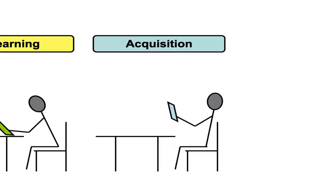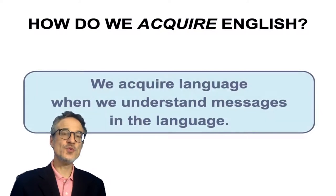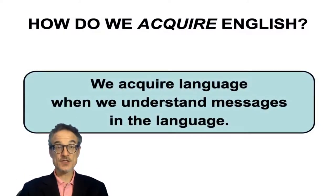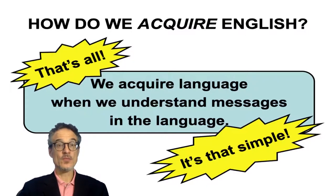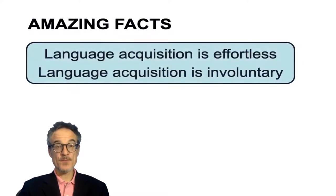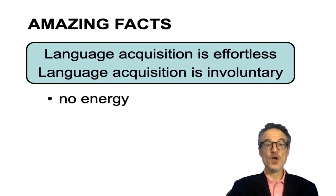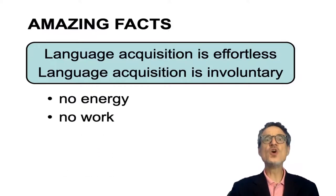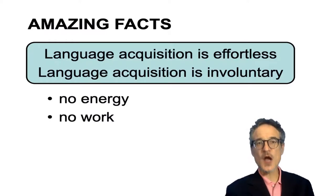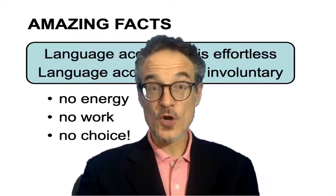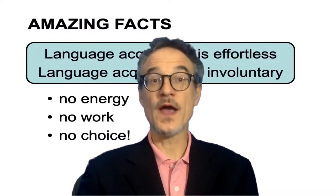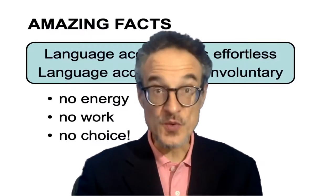So how do we acquire English? According to the hypothesis, we acquire language when we understand messages in the language — and that's all. It's very simple. A couple of amazing facts: language acquisition is effortless and involuntary. No energy or work is required. Small children don't try to pick up their first language. And almost 100% of babies will acquire their first language — it's very unusual not to.